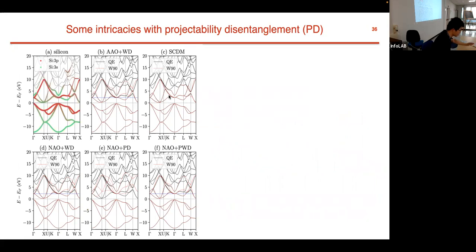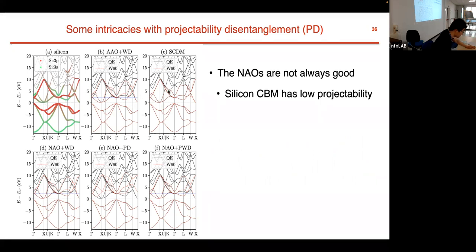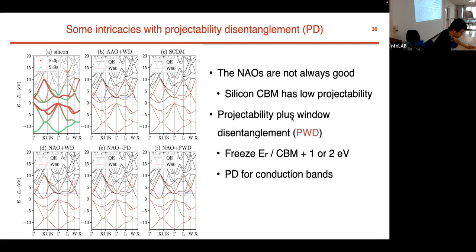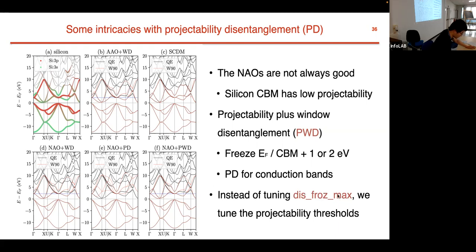These atomic orbitals are not universal across all chemical environments. For silicon, the conduction band minimum has low projectability (~80%), so it's not always well described by projectability alone. Instead, we combine projectability disentanglement with window disentanglement: we set a frozen energy window up to 1–2 eV above the Fermi energy or conduction band minimum, then use projectability disentanglement to freeze high-projectability states within that conduction band region. This better restores atomic orbitals, and instead of tuning frozen_max extensively, we mainly tune p_min and p_max.